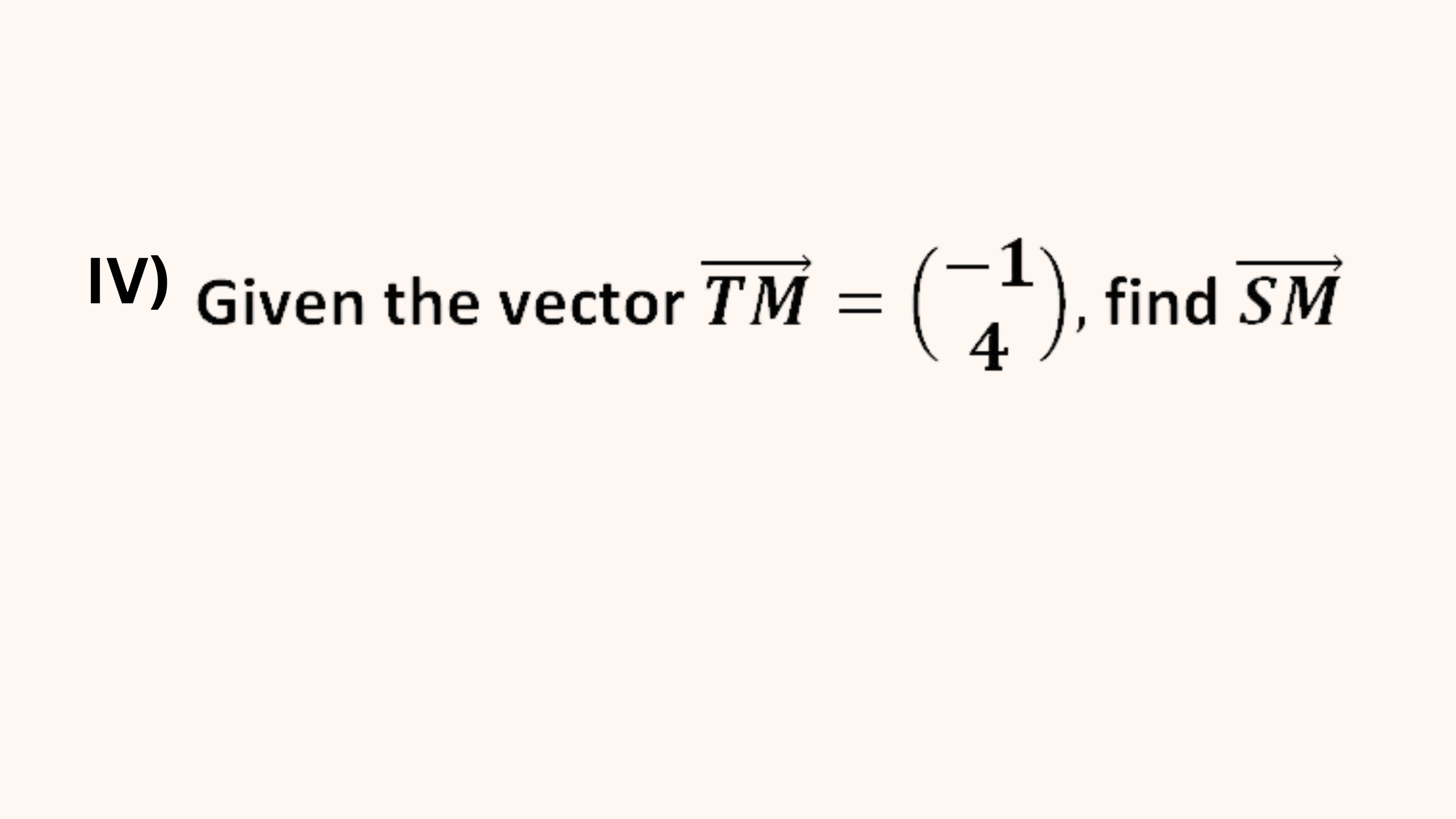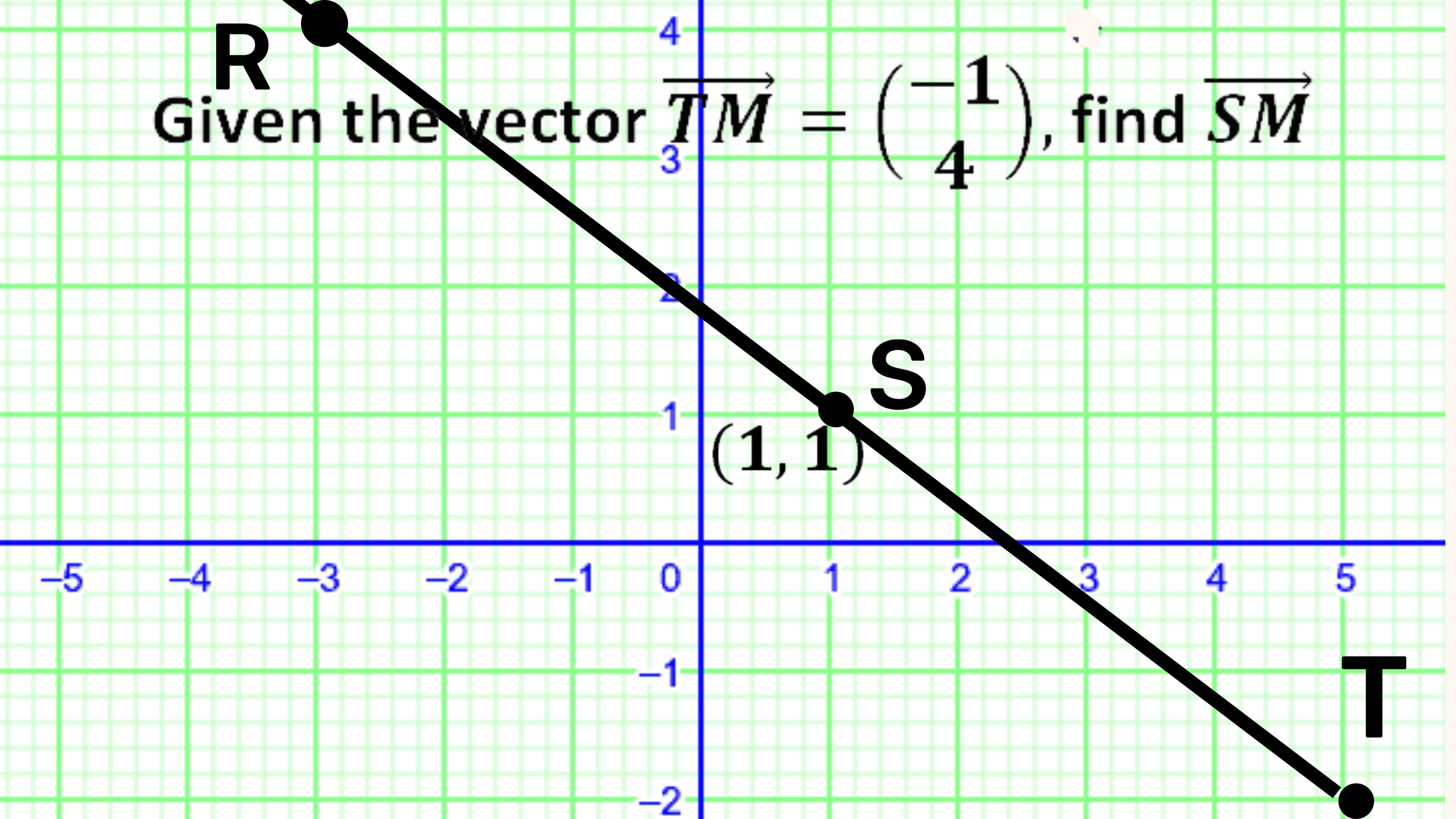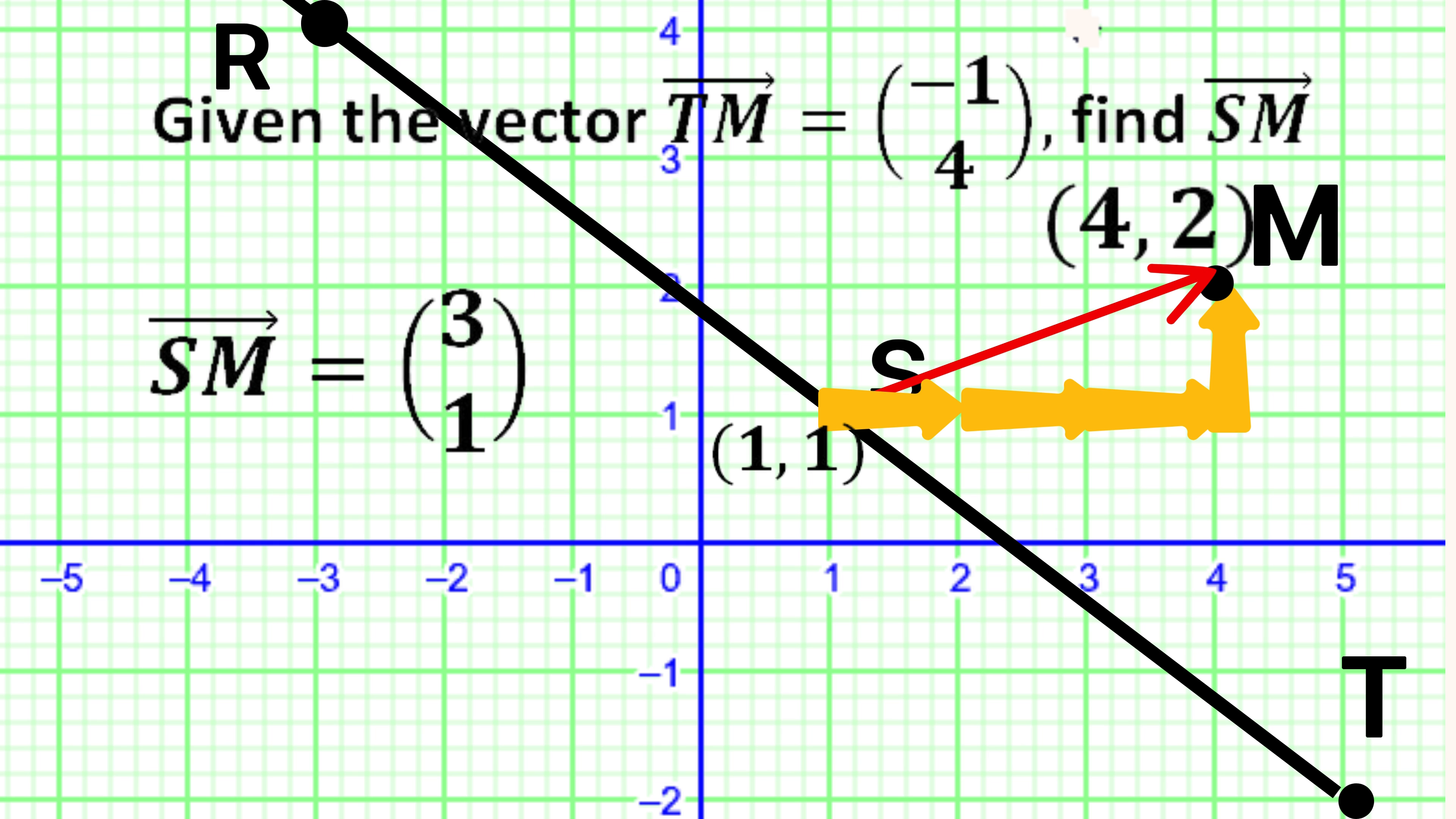Our final task is to find the vector SM. Again, we can solve this problem using different methods. We can represent the vector TM on a graph. Vector TM is (-1, 4), which means that to get from point T to point M, we move 1 unit to the left and then 4 units up. To get the vector SM we can determine that we travel 3 units to the right and then 1 unit up to get from point S to point M, hence the vector SM is (3, 1).